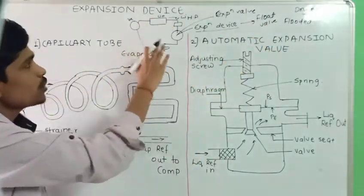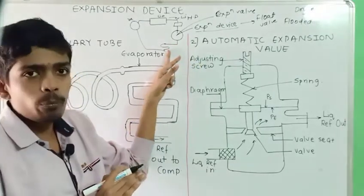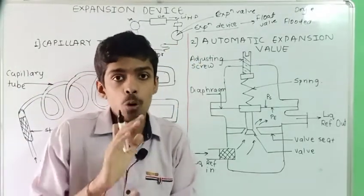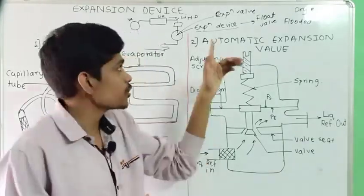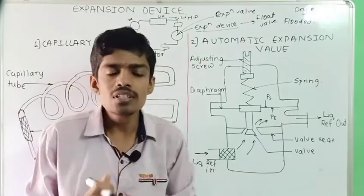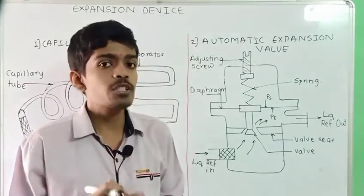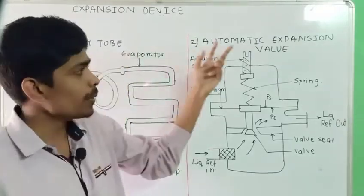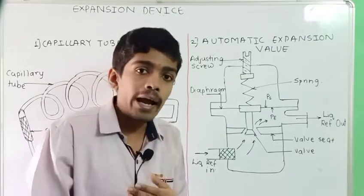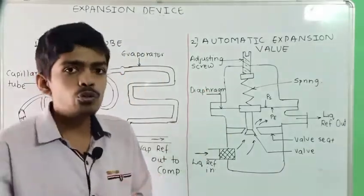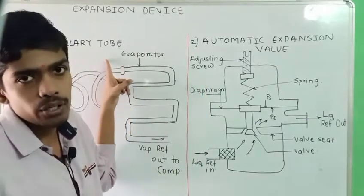The expansion device is also used to regulate the flow to the evaporator — to send the proper amount of flow to the evaporator. These are the main functions for which the expansion device is used. There are various types of expansion devices such as the capillary tube, automatic expansion valve, thermostatic expansion valve, and hand-operated expansion valve. We are going to look at the three main important types, the first being the capillary tube.